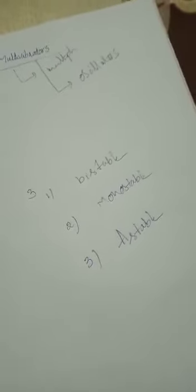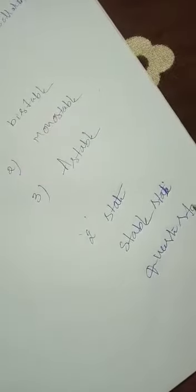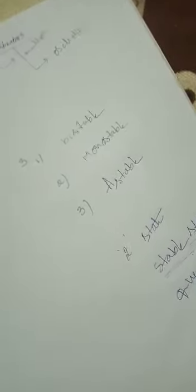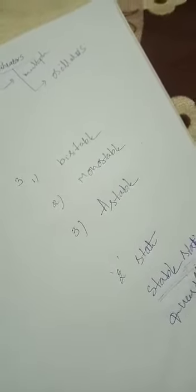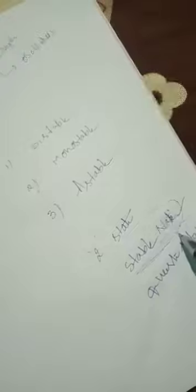Before classifying these multivibrators, first we will discuss about the states of a multivibrator. Each multivibrator operates in two states: one is the stable state and the second one is the quasi-stable state. A stable state is nothing but the circuit is operating in that particular state permanently. The multivibrator operates permanently in a particular state unless we disturb the circuit operation — that state is called a stable state.